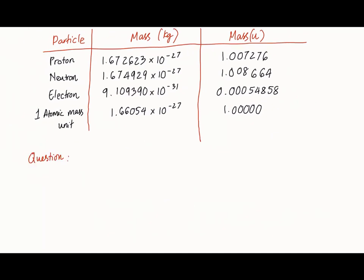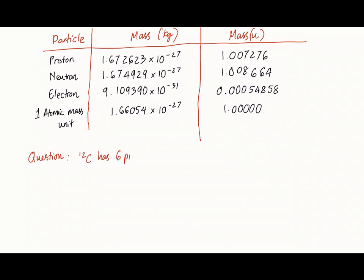So you know how a carbon-12 has 6 protons and 6 neutrons and 6 electrons? What if you add the masses of these particles together? Would it be equal to the exact mass of a carbon-12, which we know as this 12u?